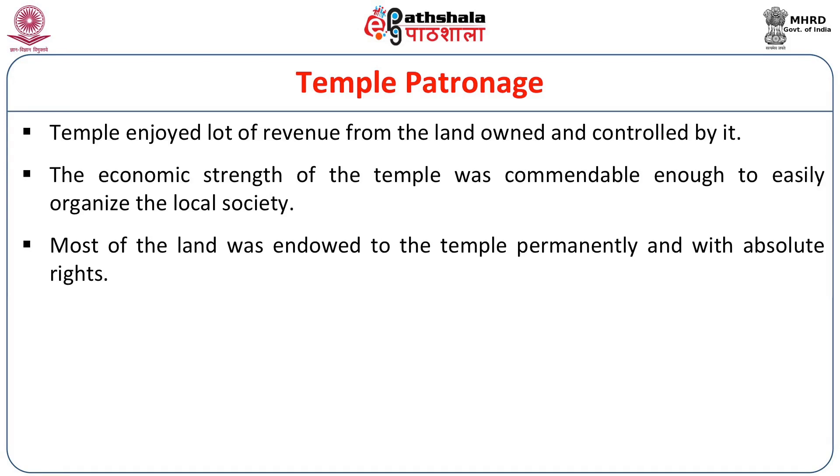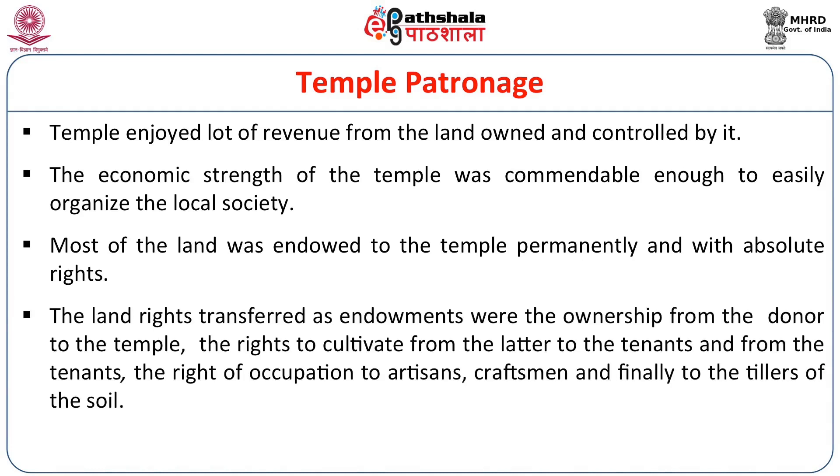Most of the land was endowed to the temple permanently and with absolute rights. The land rights transferred as endowments included ownership from the donor to the temple, the rights to cultivate from the latter to the tenants, and from the tenants the right of occupation to artisans, craftsmen, and finally to the tillers of soil. The temple lands played a vital role in uniting different social units as functionaries, involving temple functionaries, tenant cultivators, the artisan community, and real cultivators — reflecting a kind of feudal agrarian system.